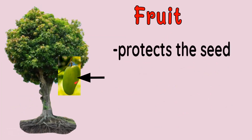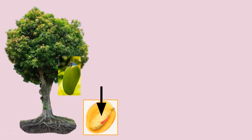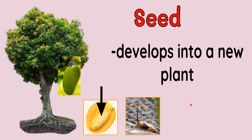Now let's go to the fruit. It protects the seed. Inside this fruit is the seed itself. It can be edible or non-edible — edible means it can be eaten, non-edible means it cannot be eaten. Inside this fruit is the seed, and the seed develops into a new plant, especially when planted into the soil. Later on, it will grow into a big plant like this mango.